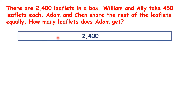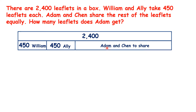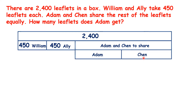So we have 2,400 leaflets in total. William and Ali take 450 each. Adam and Chen share the rest, and they share equally. So of the rest, Adam gets half and Chen gets half.